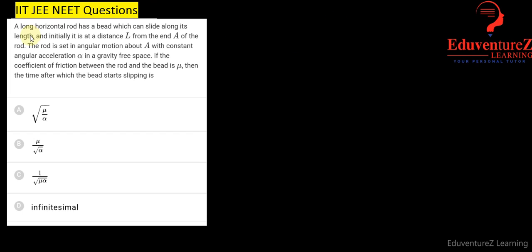Hello student, here is a question which says a long horizontal rod has a bead which can slide along its length. Initially it is at a distance L from end A of the rod.